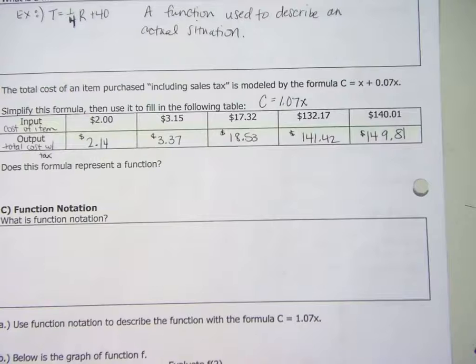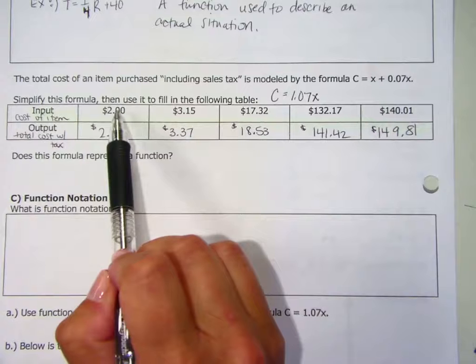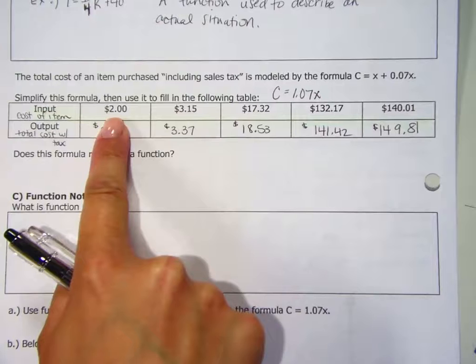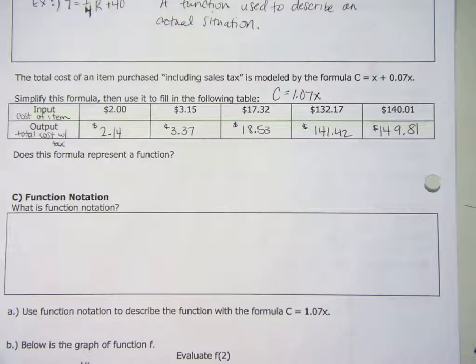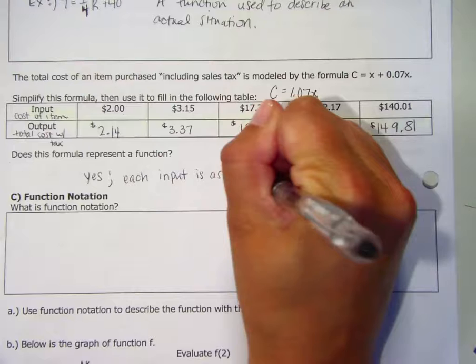Now, what I'm really concerned about with this problem is this next question. Does this formula represent a function? What we're really thinking about is the definition of a function. Does every input have exactly one output? Yes or no? Can you somehow have a $2 item and the total cost be two different things? No. So every input is only going to have one output. So we would say that yes, this is a function. Each input is associated with exactly one output.